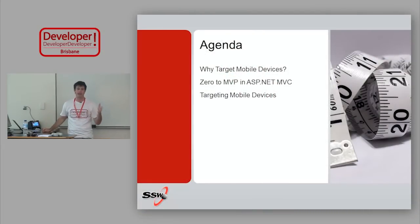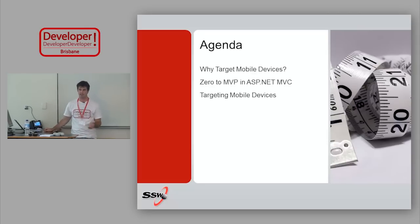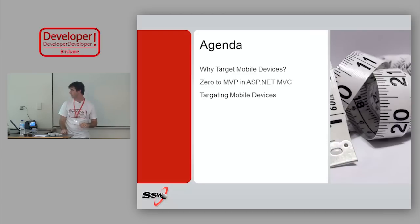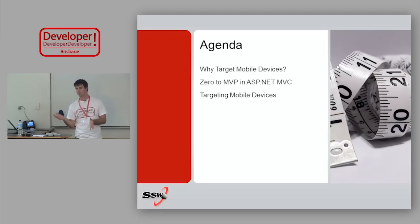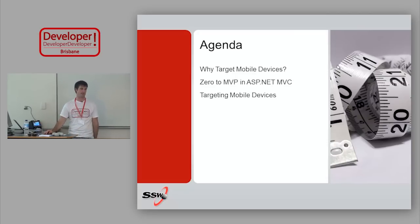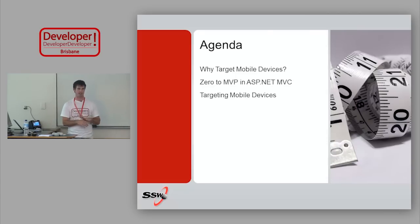What I'm going to talk about is three main things. I'm going to talk about why we're doing this anyway — why are we targeting mobile devices. I'm going to look at going from zero to an MVP using MVC, which is really quick for spinning something up from scratch and getting something that's usable and workable. And finally, we'll look at targeting the mobile devices themselves and the different techniques you can do for that.